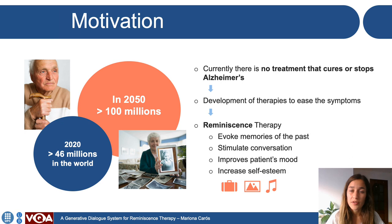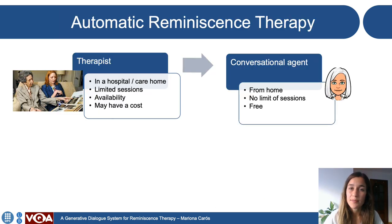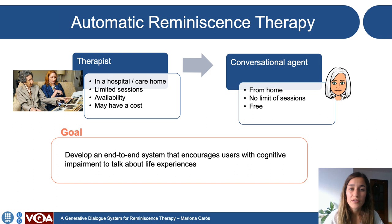One of the most used therapies is reminiscence, which stimulates memories of the patient's past by using objects, pictures or music. Reminiscence usually takes place in a care home or a hospital and is guided by a therapist. People with dementia might have some barriers to access these therapies, such as cost, availability or displacement to the care home. The goal of this work is to develop an end-to-end system that encourages users with mild cognitive impairment to talk about life experiences, like a reminiscence therapy.